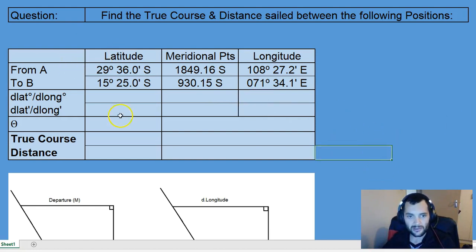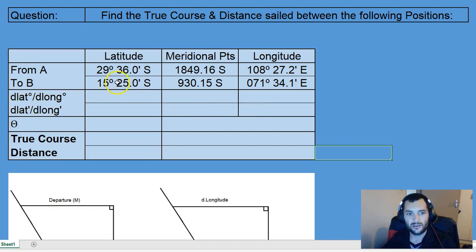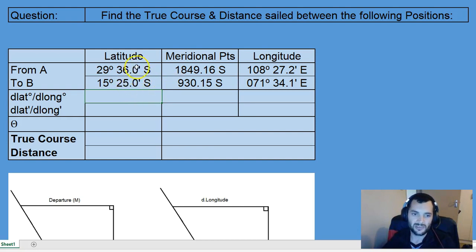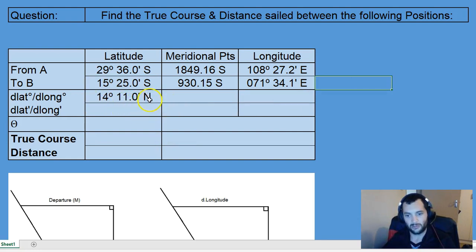Now we need to get the differences between each one of these three items. Firstly, the D Latitude in degrees between latitude A and latitude B. So 29° 36' South minus 15° 25' South — we are going from about 29.5° South northwards to a latitude of only 15° South. So it is a northwards movement, and the change in latitude is 14° 11.1' North.